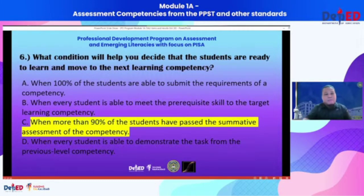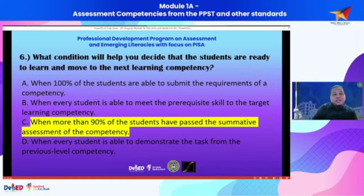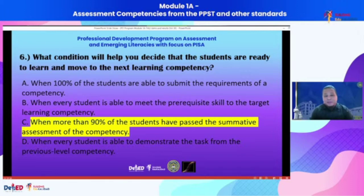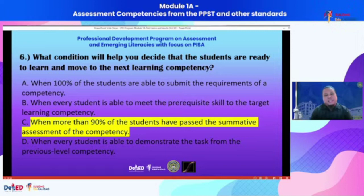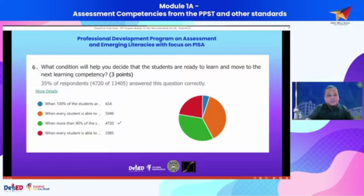Let's revisit option B: when every student is able to meet the prerequisite skill to the target learning competency. Many teachers likely chose this because of the phrase 'when every student' — the goal of no one left behind. However, what is actually met in option B is only the prerequisite skill, not yet the actual target learning competency. Therefore, that is not the best answer. The best answer is option C, and only 35% of teachers who took the test got it correctly.